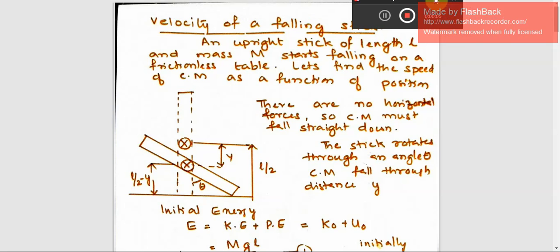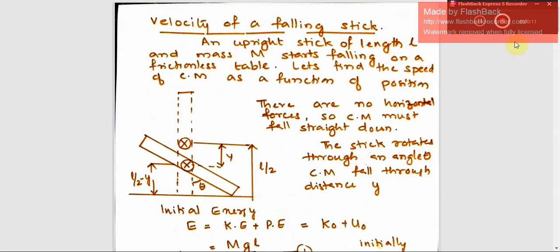Let us consider an upright stick of length L and mass M that is falling on a frictionless table. The dotted line represents the stick, and the center of mass is marked. Since there is no horizontal force acting on the center of mass, the center of mass will fall straight down and the stick will come to rest.